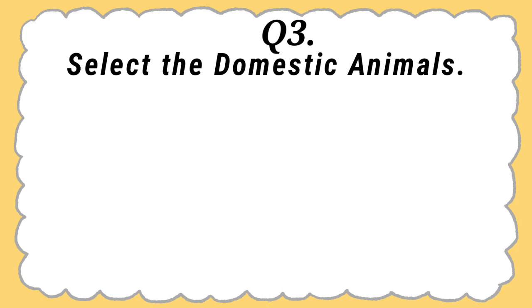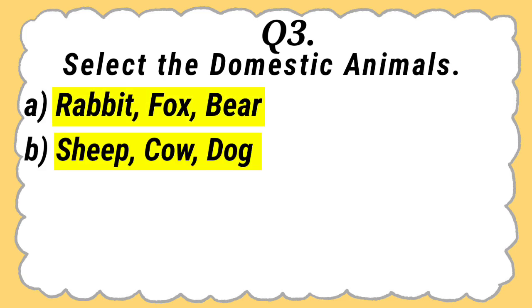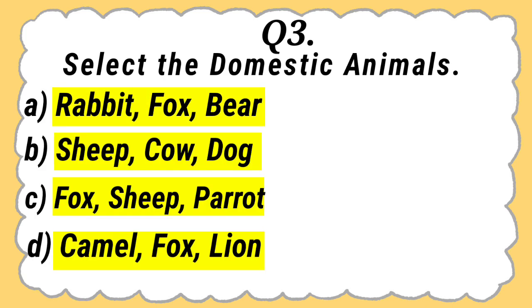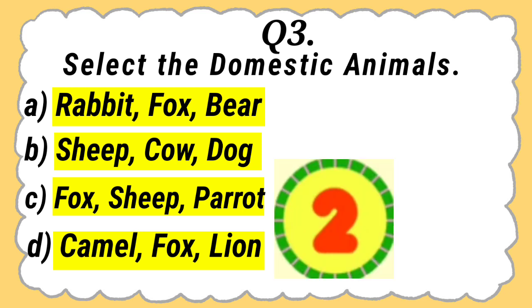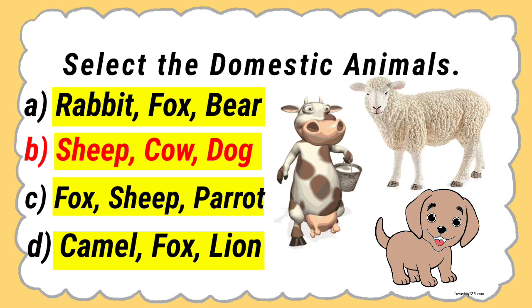Question 3: Select the domestic animals. Rabbit, Fox, Bear, Sheep, Cow, Dog, Sheep, Parrot, Camel, Fox, Lion. And the answer is Sheep, Cow, Dog.